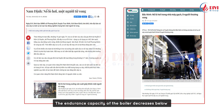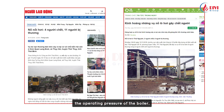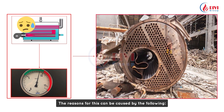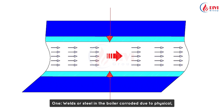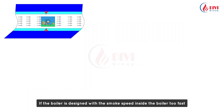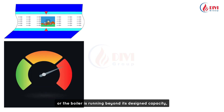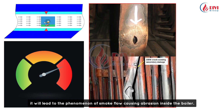For the second reason, the endurance capacity of the boiler decreases below the operating pressure. This can be caused by several factors. First, welds or steel in the boiler corrode due to physical or mechanical abrasion by the smoke flow inside the boiler. If the boiler is designed with smoke speed that is too fast, or the boiler is running beyond its design capacity, it will lead to the smoke flow causing abrasion inside the boiler.